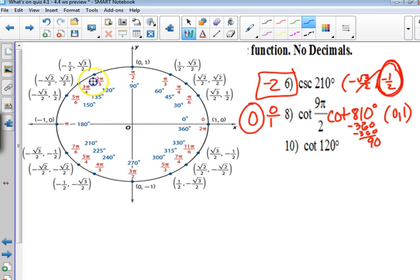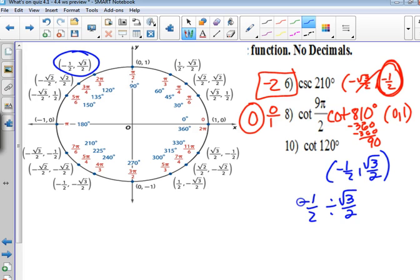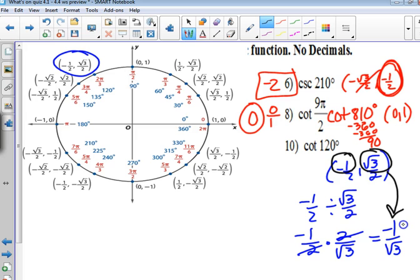Cotangent of 120. Our ordered pair is negative 1 half, square root of 3 over 2. Cotangent is cosine over sine. You could do a whole bunch of flipping over and reducing and then rationalizing. But do you remember what always happens? The 2s always cancel out. So you could have just said cosine over sine is negative 1 over square root of 3 by ignoring the 2s. And then that rationalizes to negative root 3 over 3. We're okay?